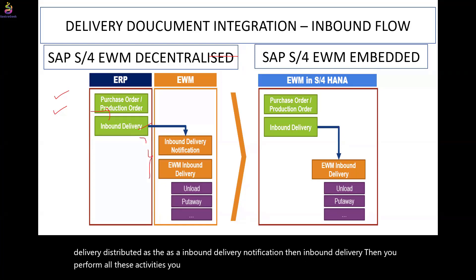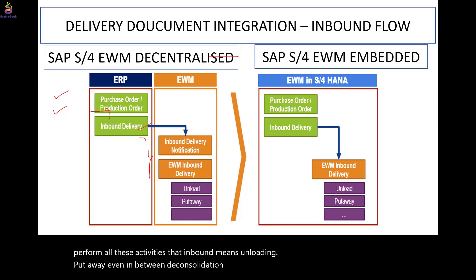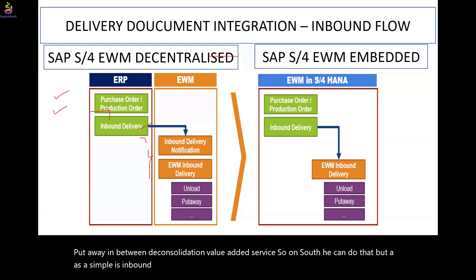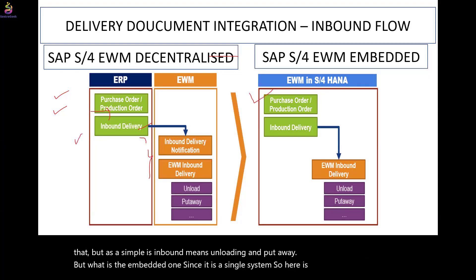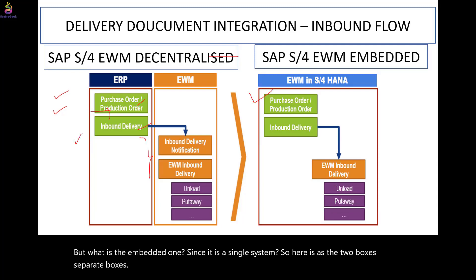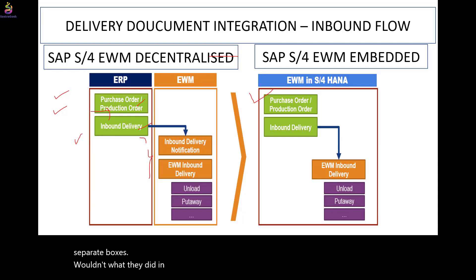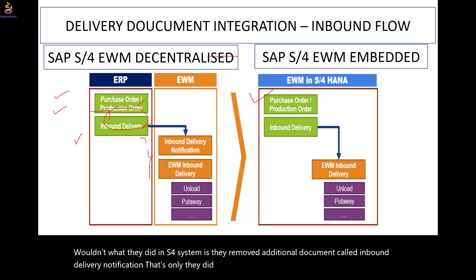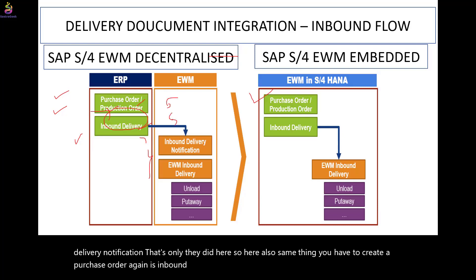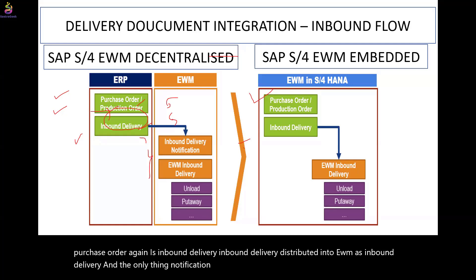In the inbound flow you perform activities like unloading, put away, and in between consolidation and value-added services. Simply put, inbound means unloading and put away. For the embedded scenario, since it is a single system, what they did in S4 is they removed the additional document called inbound delivery notification. So you still create a purchase order and inbound delivery, but the notification document is removed — the rest of the activities remain the same.